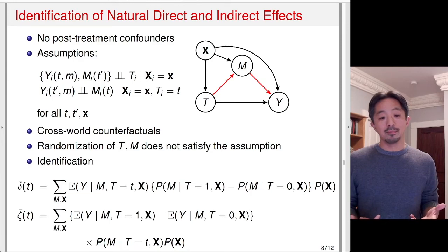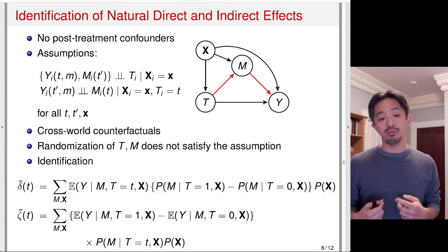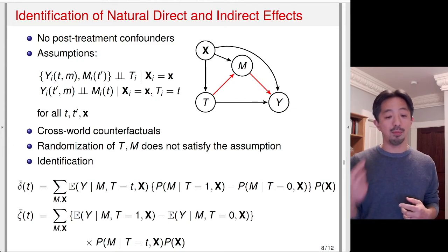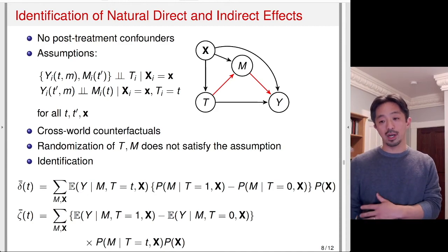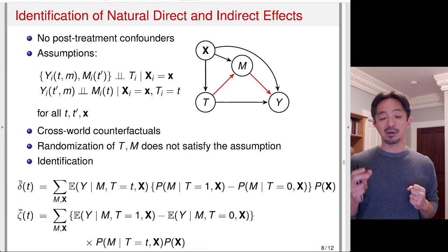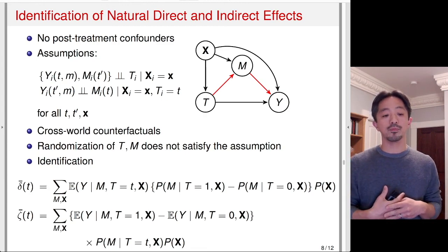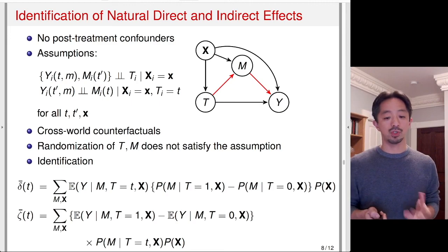What about the identification formula? Since we do not have post-treatment confounders, identification is much easier. All we need to do is model M given T and X, then predict under each treatment condition what M might be, and plug that value of M into the regression function. There is no additional step for Z. You model the mediator given treatment and X so that you can predict M(1) and M(0), then plug those values into the outcome conditional expectation function.